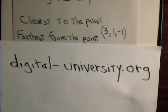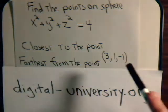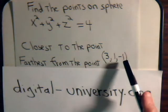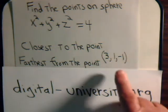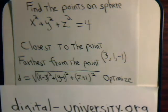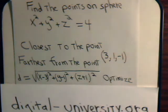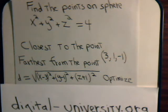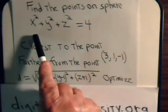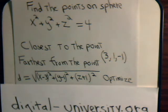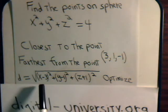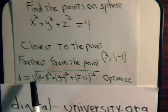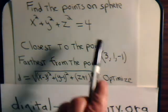So here we have again the sphere and we want to know what point on this sphere is closest to this point and what point on this sphere is furthest away from this point. The general distance formula would be: (x minus 3) squared plus (y minus 1) squared plus (z plus 1) squared. We also have the constraint that x, y, and z must be chosen so that x squared plus y squared plus z squared equals 4. This is the function that we want to optimize — we want to find its maximum value and its minimum value subject to this constraint.